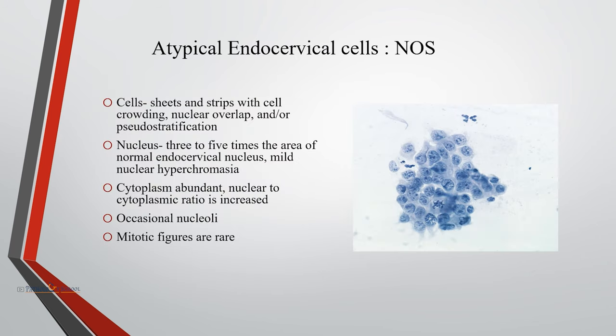Atypical endocervical cells, not otherwise specified (AGC-NOS): when cells are arranged in sheets and strips with cell crowding, nuclear overlap, and pseudostratification, the nucleus is three to five times the area of a normal endocervical nucleus. Mild nuclear hyperchromasia may be seen. Cytoplasm is abundant, nuclear-to-cytoplasmic ratio is increased, with occasional nucleoli, and mitotic figures are rare.